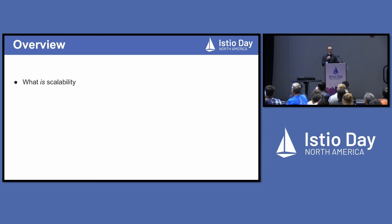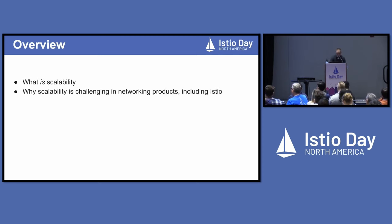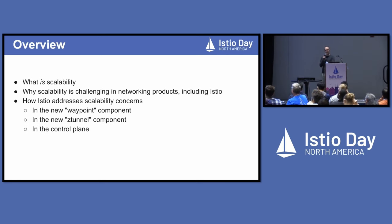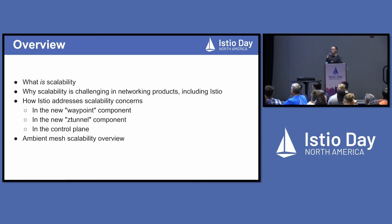What we're going to be going over today is a bit of an overview of what scalability is — it's worth giving a review at least. We're also going to be talking about why scalability can be challenging for a product like Istio or even similar networking products like Kubernetes and others. How Istio is addressing these concerns in ambient mesh in the waypoint component, z-tunnel component, and in the control plane. And finally, an overview of what it all looks like together and what kind of scalability you can expect, plus some next steps.